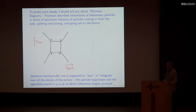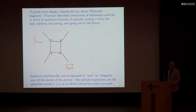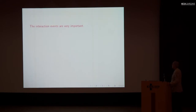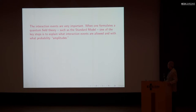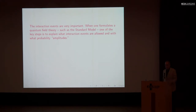This is a kind of classical picture of a Feynman diagram, which is the kind of picture you'll usually see drawn. The interaction events are very important — it's because of the interaction events that something happens. When one formulates a quantum field theory such as the standard model, one of the key steps is to explain what interaction events are allowed and with what probability amplitudes. Crudely speaking, you have to say what is allowed to happen and at what rate it can happen.